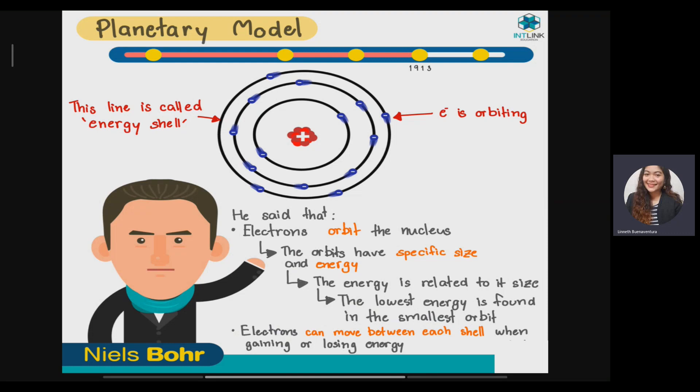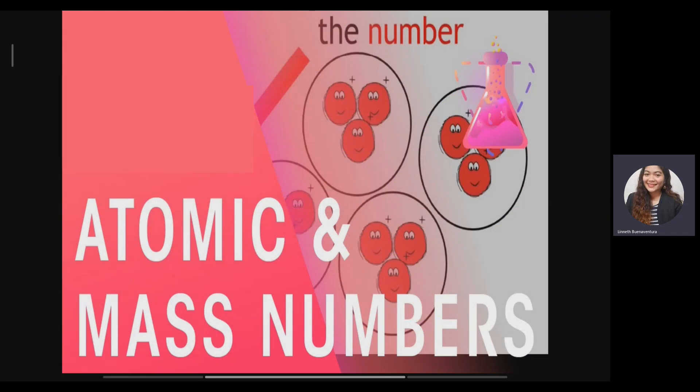Erwin Schrödinger introduced the quantum mechanical model. According to him, electrons don't orbit in fixed energy shells but can be found in an electron cloud. Any electron far from the nucleus has a low chance of being found, while electrons near the nucleus have a higher chance of being found. He discovered that electrons move around the nucleus in a cloud, not orbits, but this orbital helps us predict the area where we can find electrons.